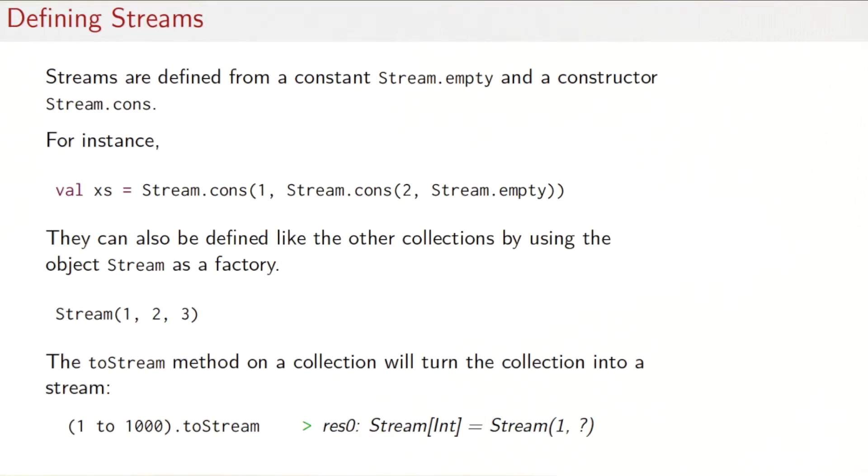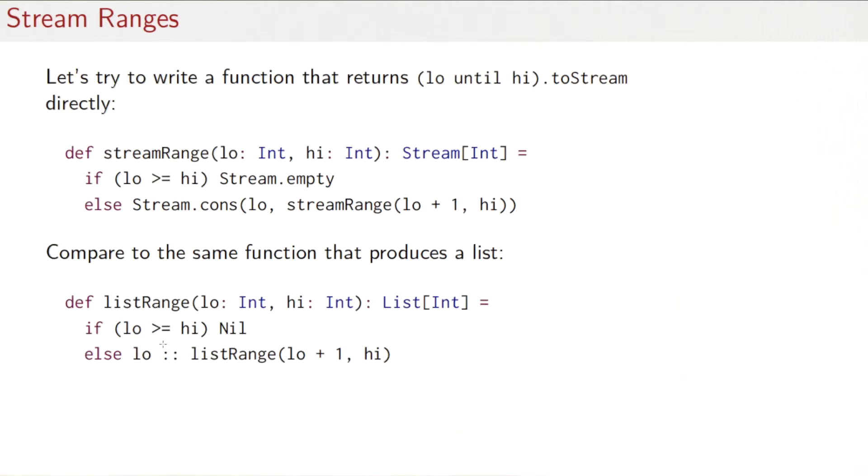A third way to produce streams is with the toStream method, which can be applied to any collection to produce a stream. So an example you see here, we have a range one to thousand and turn it to a stream with a toStream method. It's interesting to see what the result of that call is. So what we see here is a stream of int, which is written like this is a stream of one and question mark. What that means is that a stream is essentially a recursive structure like a list. So we have a one here, but the tail is not yet evaluated. So that's why the interpreter or worksheet has printed a question mark here. The tail will be evaluated if somebody wants to know explicitly.